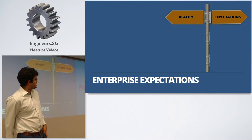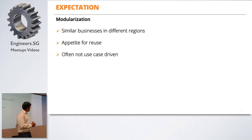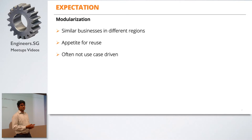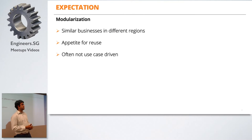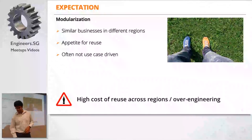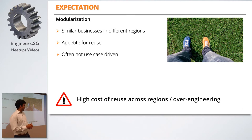Let me start with enterprise expectations. One expectation that many enterprises have is modularization. It's a very broad term and not very easily defined. The need for this is because enterprises run similar businesses in different parts of the world, and once a solution is done in one part, there is a very high appetite for reuse. Unfortunately, this kind of reuse is not use-case-driven — it's often fictional, and can lead to very high cost or overengineering if you don't think carefully about it.